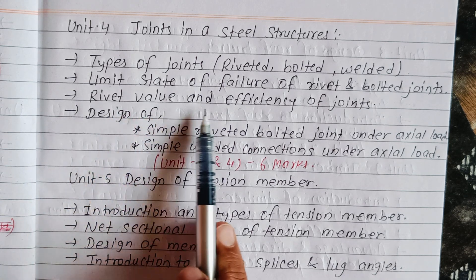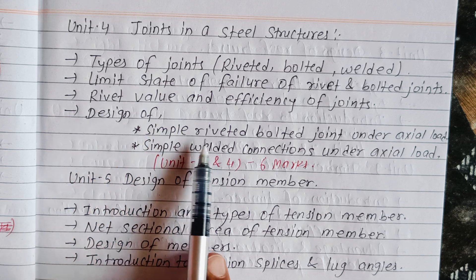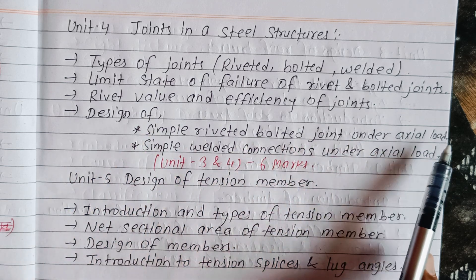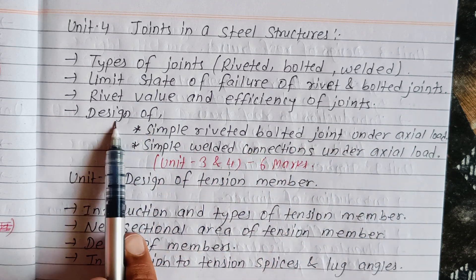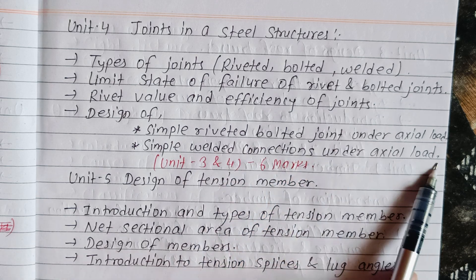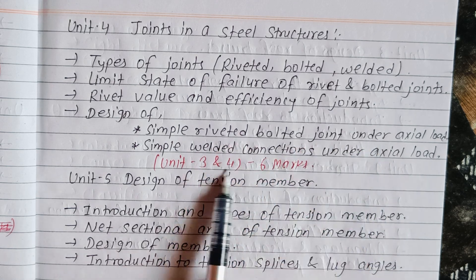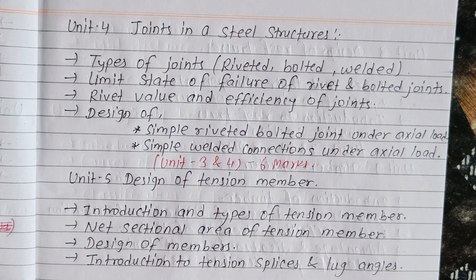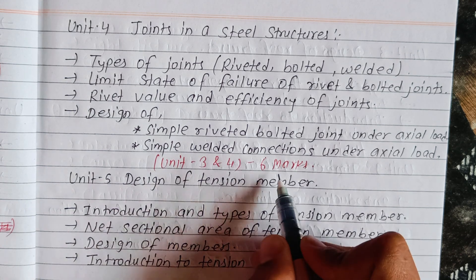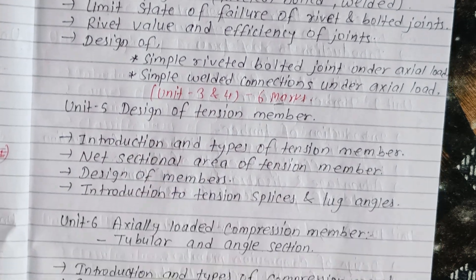Unit 4 topics include: rivet value and efficiency of joints; design of simple riveted and bolted joints under axial load; and design of simple welded connections under axial load. Riveted, bolted joints and welded connection design carry 6 marks in the exam.